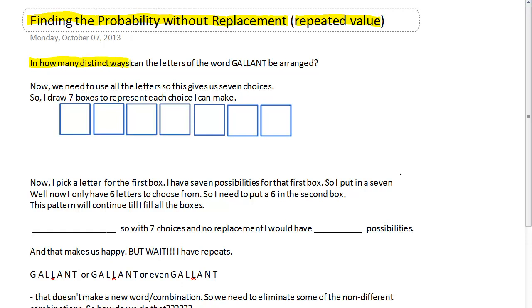in how many distinct ways can the letters of the word GALLANT be arranged? Now, it just says arrange in distinct ways. I don't actually have to make real words, they have to be real letters, they don't have to be real words. So don't make this more complicated than it really is.